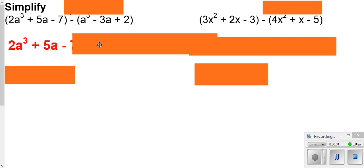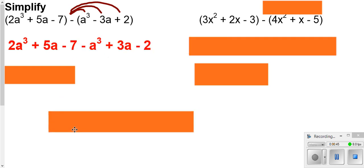So we really don't need the parentheses around the first part. But for the second part, to get rid of the parentheses, we have to distribute through the negative. Because it's really plus a negative 1 here. So we've got to basically multiply through by that negative 1. That changes all of our signs.